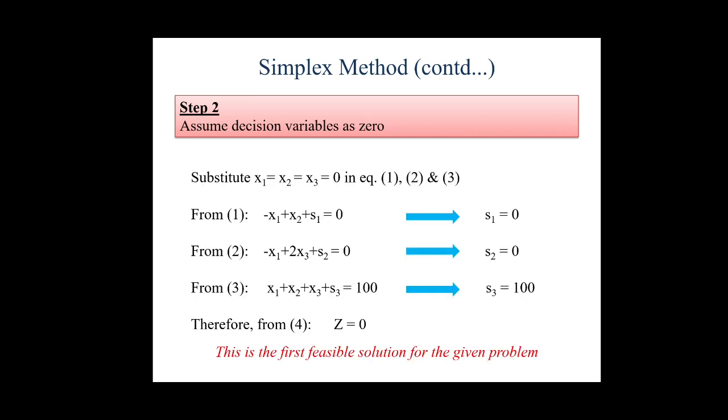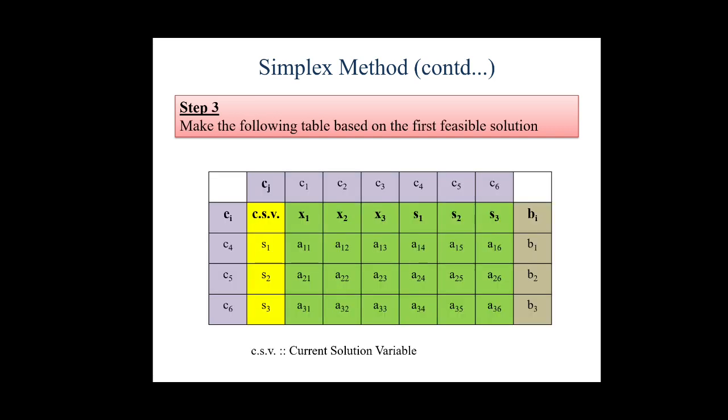Step 2: In step 2 we assume decision variables x1, x2, x3 as zero. And through this we calculate the values of s1, s2, s3 from equations 1, 2, and 3. If we substitute these values in our objective function, then the objective function value comes to 0. This is our first feasible solution for the given problem.